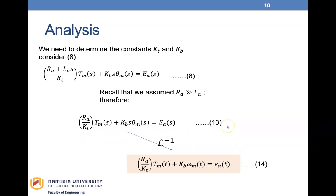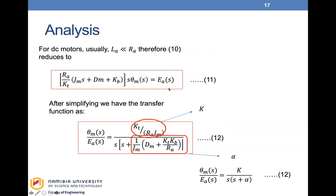We need to determine the constants KT and KB. JM and DM are the inertia and damping of the armature and any additional load. These are constants we need to know to complete the model.